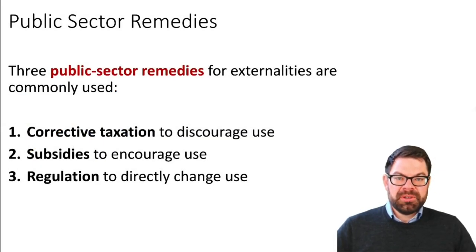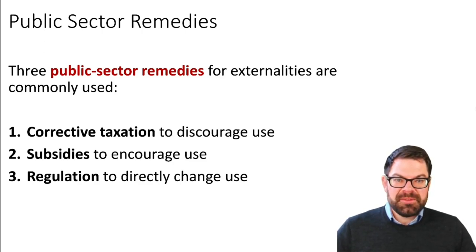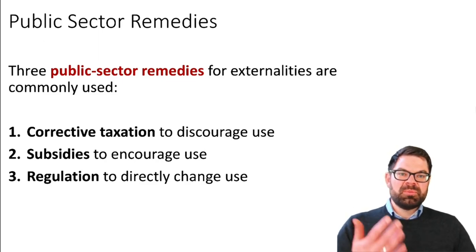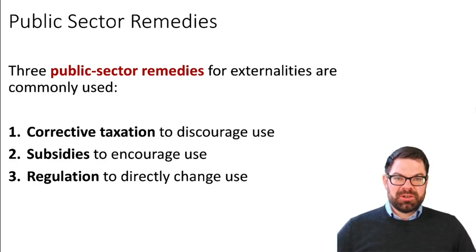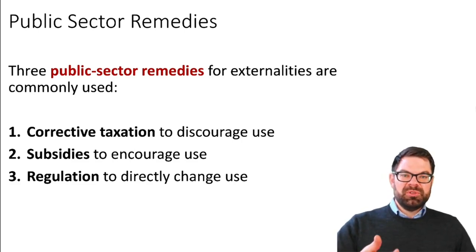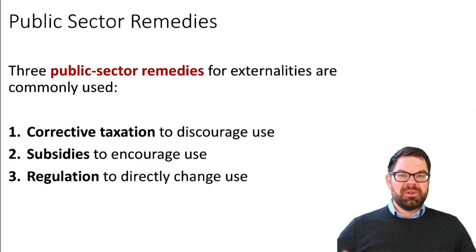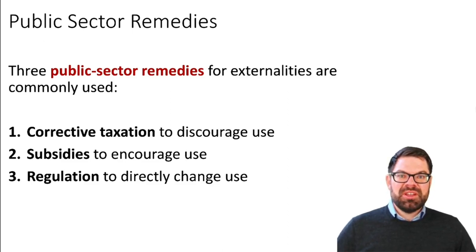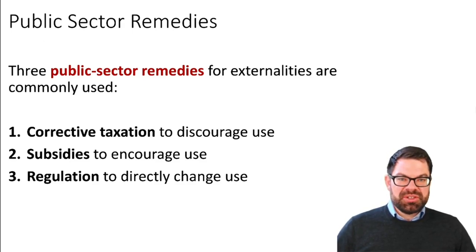So far in this lecture we have learned that externalities are market failures. If there are negative externalities in production, producers produce too much — above what would be the efficient level of production. The problem is that by producing they also pollute the air or water, or cause some other negative effect or damage to other market participants, and they don't factor that damage into their behavior.